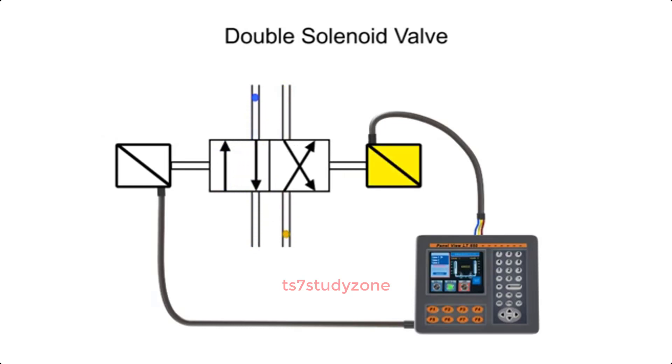Energizing the second solenoid will send the valve to the second position. Even if the second solenoid is de-energized, the valve will remain shifted until the first solenoid is re-energized. Since there is nothing holding the valve in the shifted position other than friction, these types of valves should be mounted horizontally to avoid self-shift due to excessive air flow or vibration.